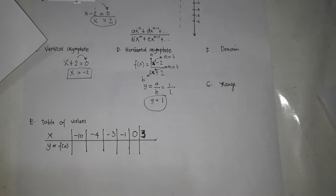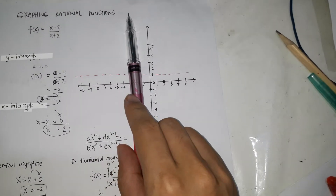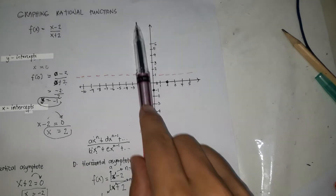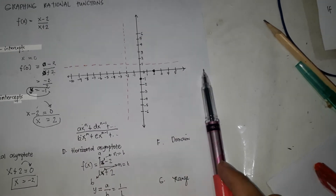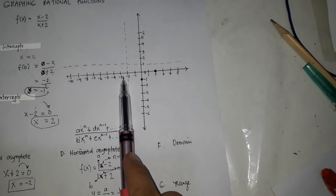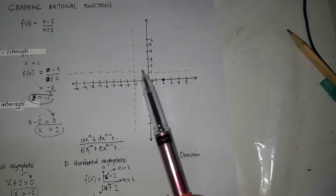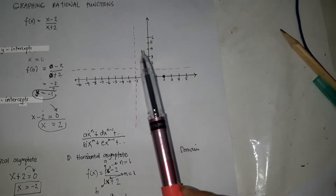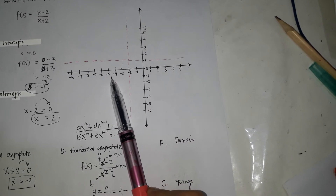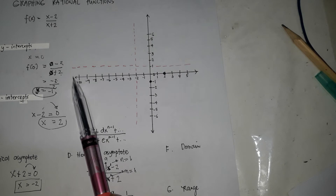Next, we're going to make the table of values. The vertical asymptote divides the graph into two parts — the left side and the right side. Choose three x-values on the left side of the vertical asymptote. I chose negative 3, negative 4, and negative 10. Then choose three x-values on the right side: I chose negative 1, 0, and 3.